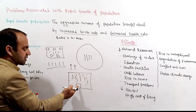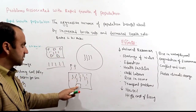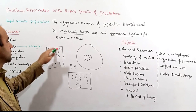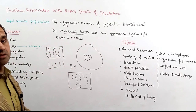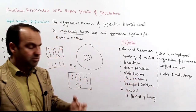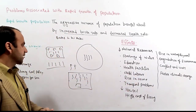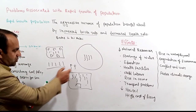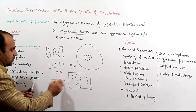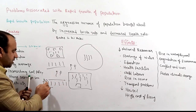The population is outpacing available resources, leading to serious problems. Child labour is one such problem — children who should be in school are forced to work. Some children are put into labour to support their families. This is a serious consequence of rapid population growth.